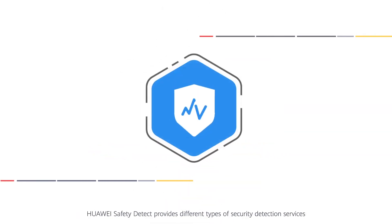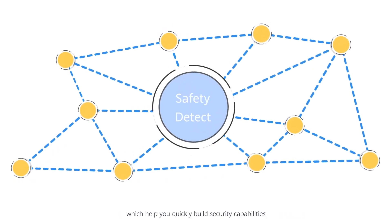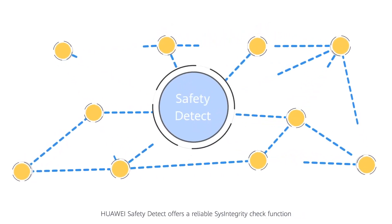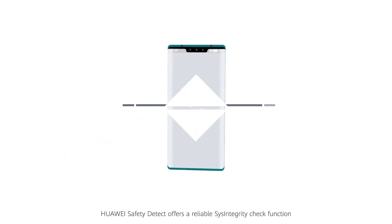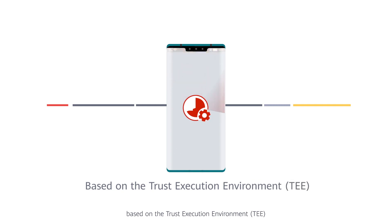Huawei Safety Detect provides different types of security detection services which help you quickly build security capabilities. Huawei Safety Detect offers a reliable SysIntegrity check function based on the Trusted Execution Environment, or TEE.